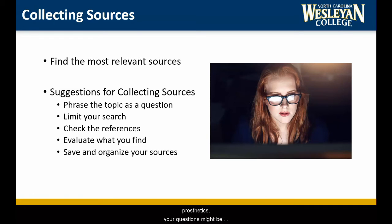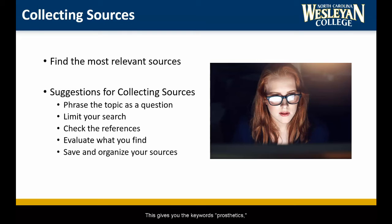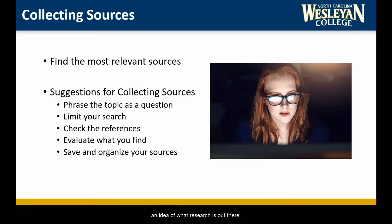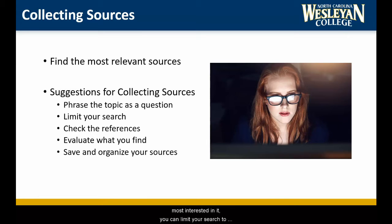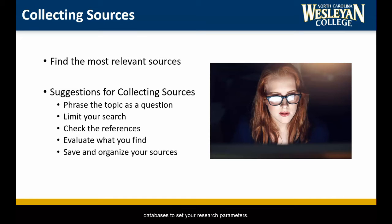For example, if your topic is human prosthetics, your questions might be: What research has been done to determine the best metals for use in human prosthetics? How can prosthetics enhance human abilities? What research has been done on how human tissue heals around surgically implanted prosthetics? This gives you the keywords: prosthetics, metals, enhancement, surgical implants, and healing. Limit your search. Starting broad can give you an idea of what research is out there, but it can also pull up a lot of sources that do not quite meet your needs. Once you have an idea of how large the topic is, what conversations are being had, when they occurred, and what publications are most interested in it, you can limit your search to focus on specific timeframes and aspects of the topic, helping you find the most relevant sources. Use the advanced search options in academic databases to set your research parameters. If you get too few results, you can always loosen those parameters.